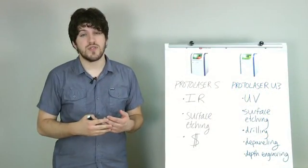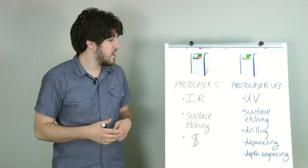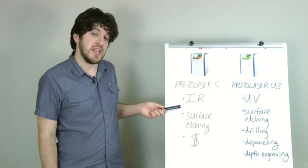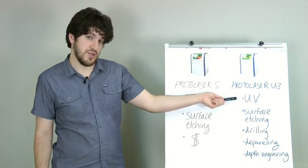The main difference between the Protolaser S and the Protolaser U3 is the laser source. The Protolaser S features an infrared laser source, while the Protolaser U3 features an ultraviolet laser source.